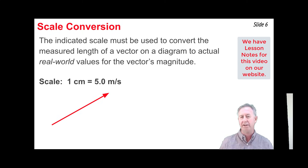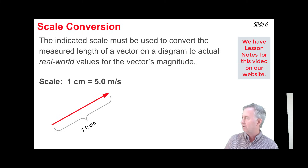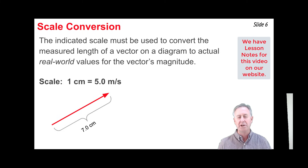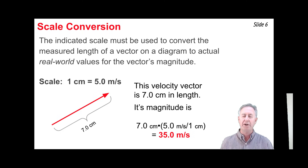For instance, here we have a velocity vector drawn to the scale that 1 centimeter equals 5.0 meters per second. If we measure the length of this vector, it comes out to be 7.0 centimeters. Using the scale, we can convert this length to the actual magnitude of the velocity vector, which turns out to be 35.0 meters per second.